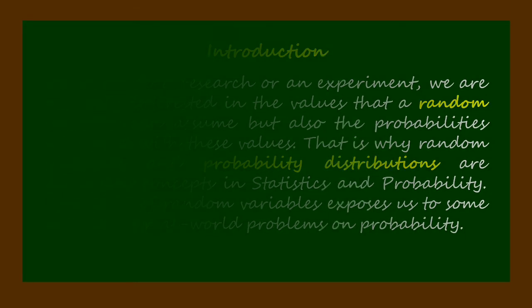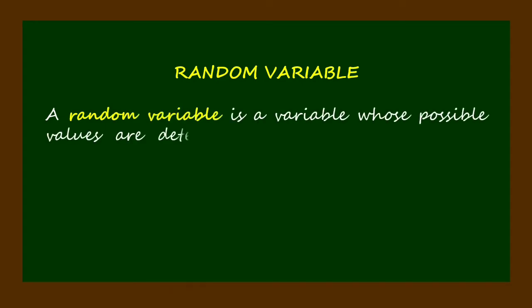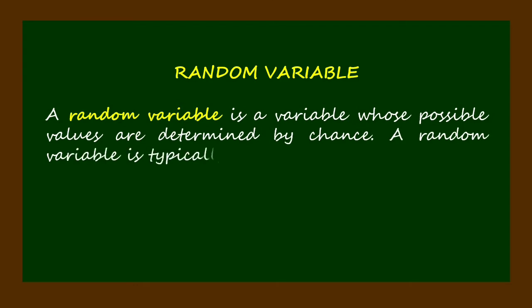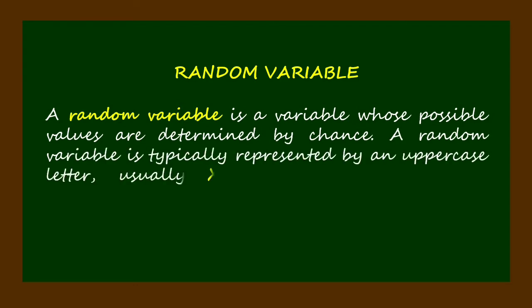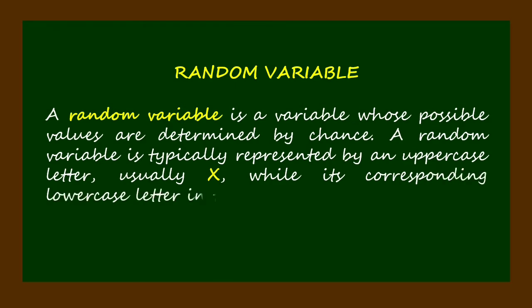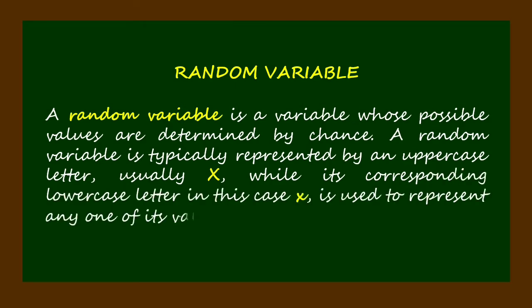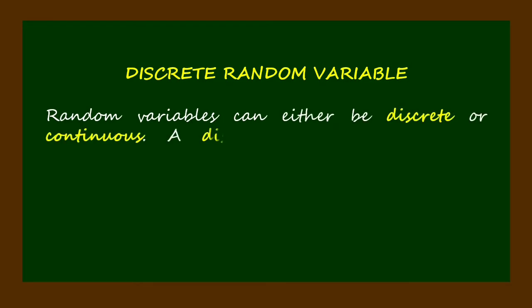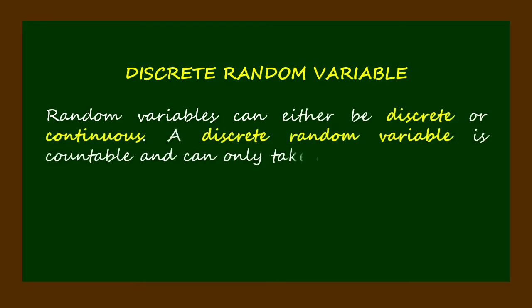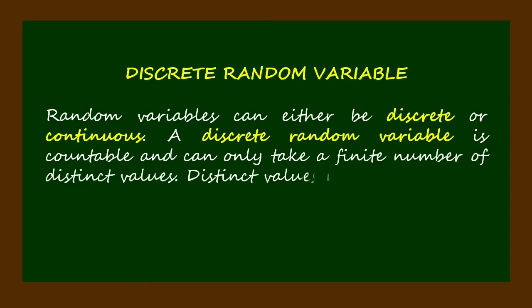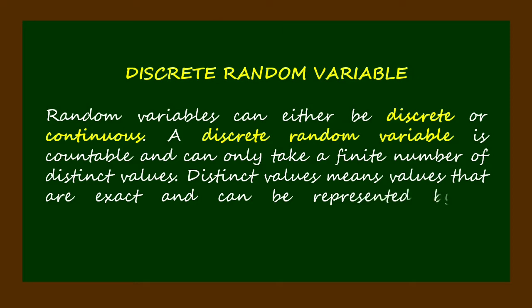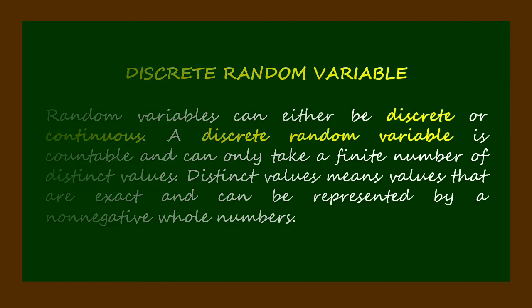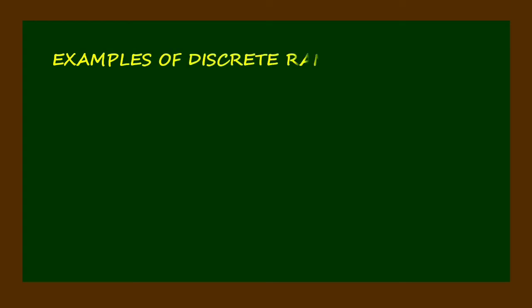A random variable is a variable whose possible values are determined by chance. A random variable is typically represented by an uppercase letter, usually X, while its corresponding lowercase letter x is used to represent any one of its values. A discrete random variable is countable and can only take a finite number of distinct values. Distinct values means values that are exact and can be represented by non-negative whole numbers.